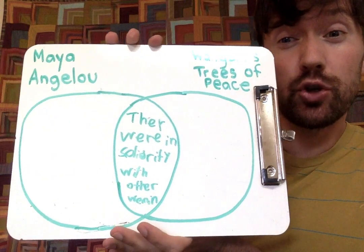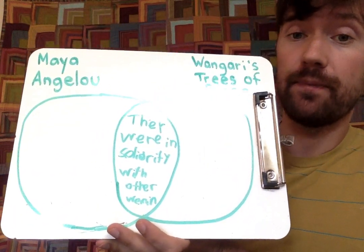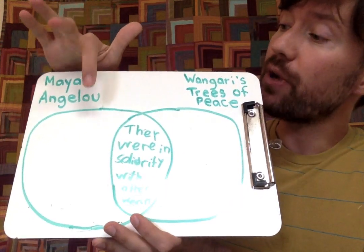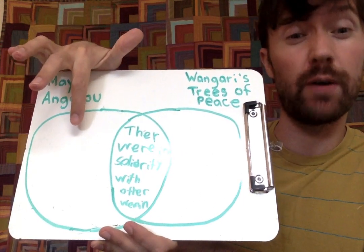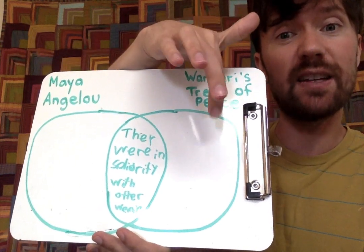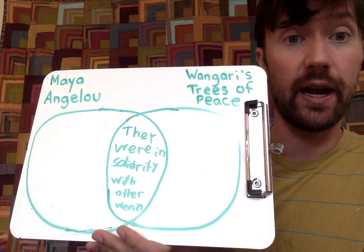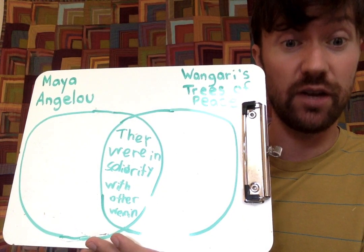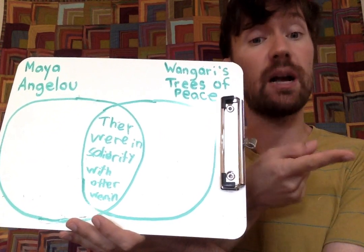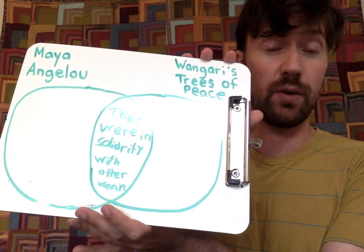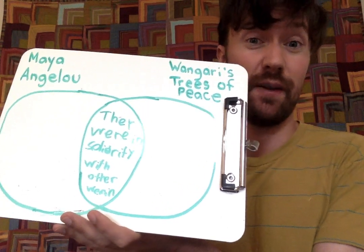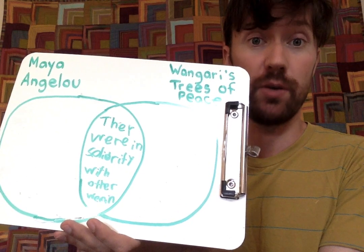So that was something true for both books. Your job today is to use words, writing, or draw a picture to come up with things that were different — things that were true for Maya Angelou and her heart, brain, and experiences, and things that were only true for Wangari and her heart, brain, and experiences. You can talk about it, write it with words, or illustrate it with a picture to show your thinking. Your job today is to use a Venn diagram to show what's different about the stories. Can't wait to hear what your brain comes up with.